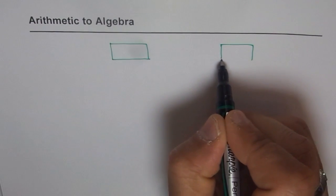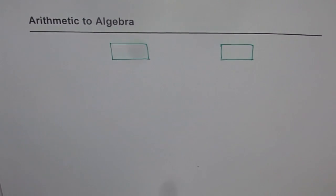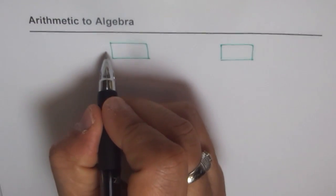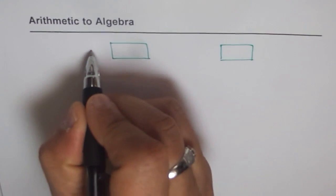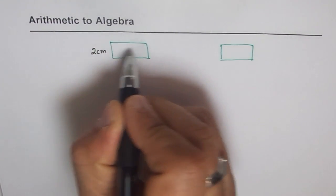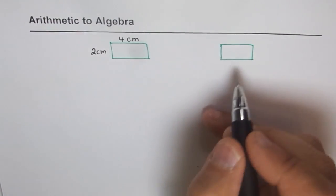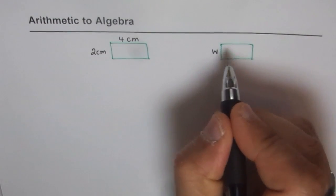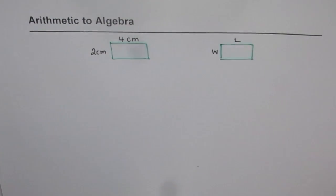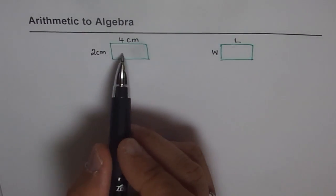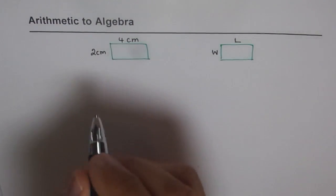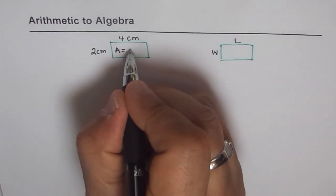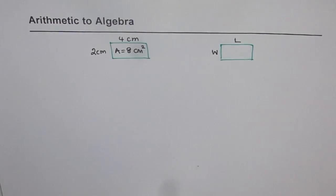So I'm making here two rectangles. Let's say this rectangle has a width of two centimeters and length of four centimeters. Now in this case, I don't specify any length or width. I just say width W and length as L. Now what is the area of this rectangle? The area is two times four, which is eight centimeters square.